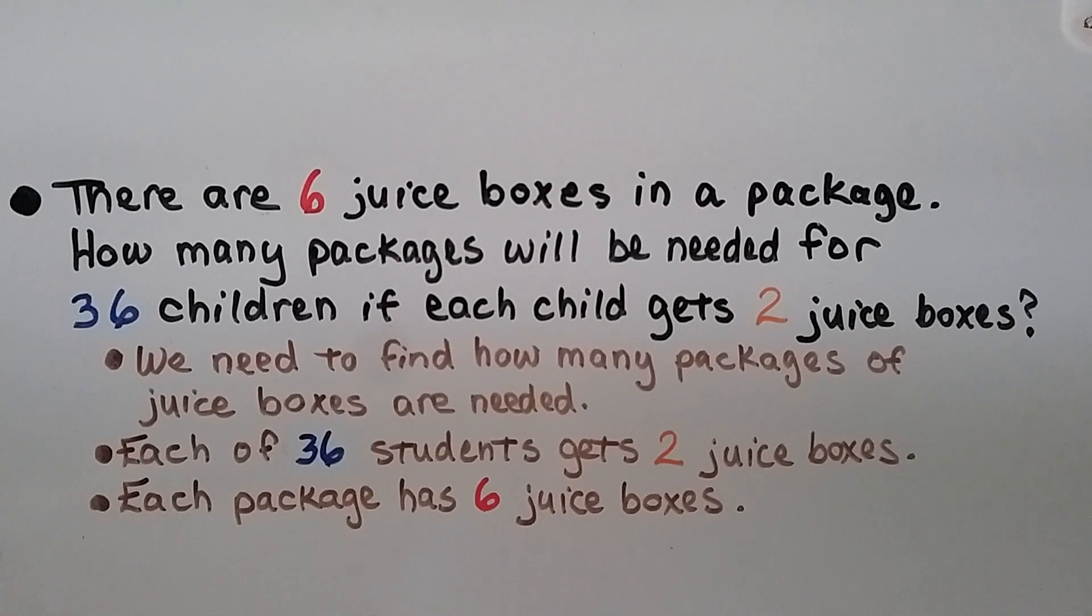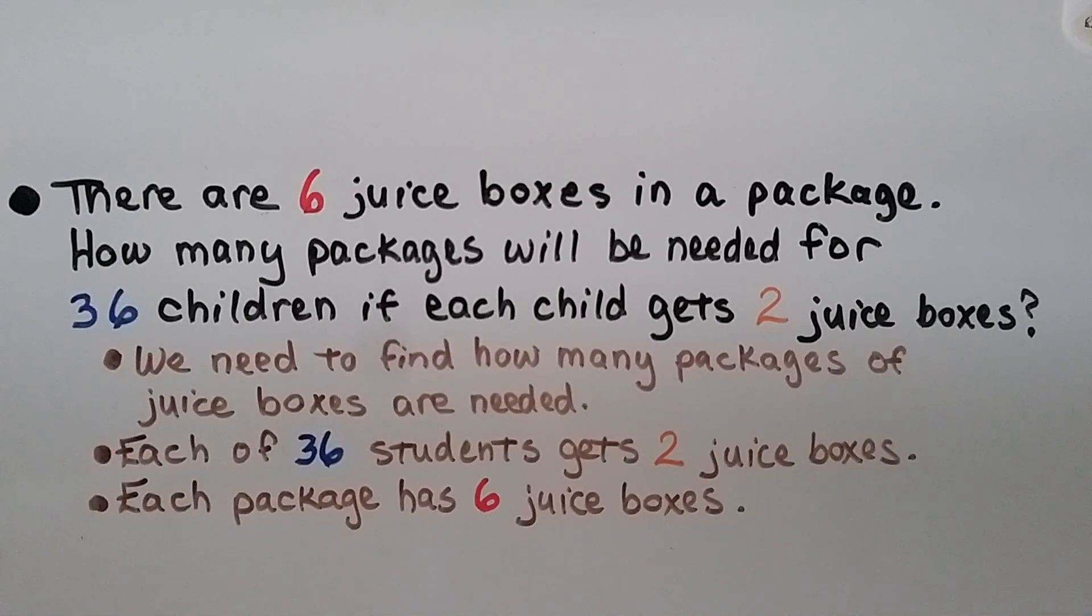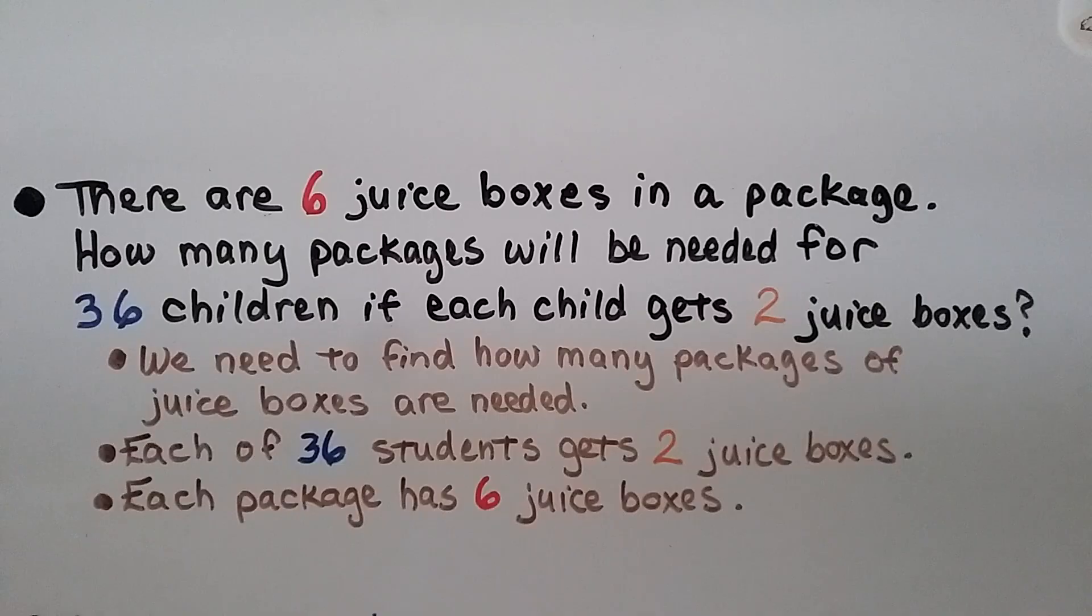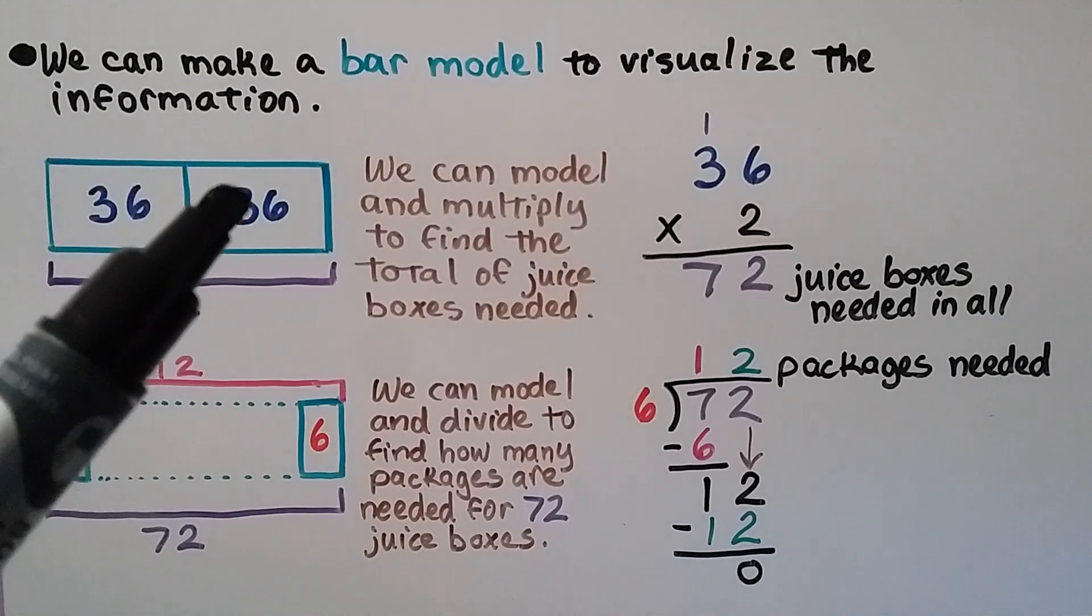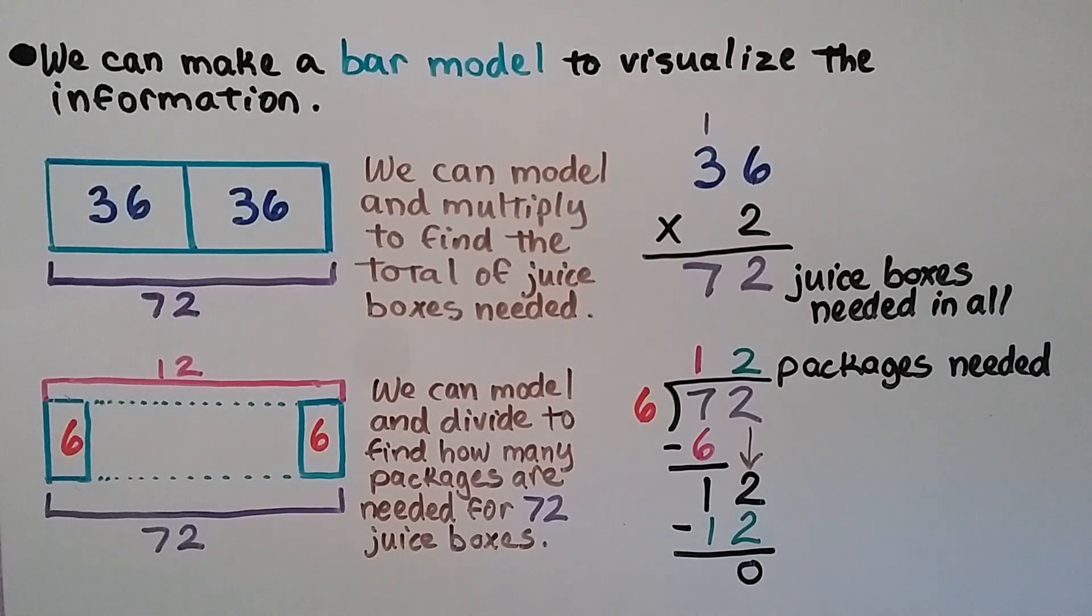There are 6 juice boxes in a package. How many packages will be needed for 36 children if each child gets 2 juice boxes? So we need to find how many packages of juice boxes are needed. Each of 36 students gets 2 juice boxes, and each package has 6 juice boxes. We can make a bar model to visualize the information. We have 36 children, and they're each going to get 2 juice boxes, so we can do 36 and 36.